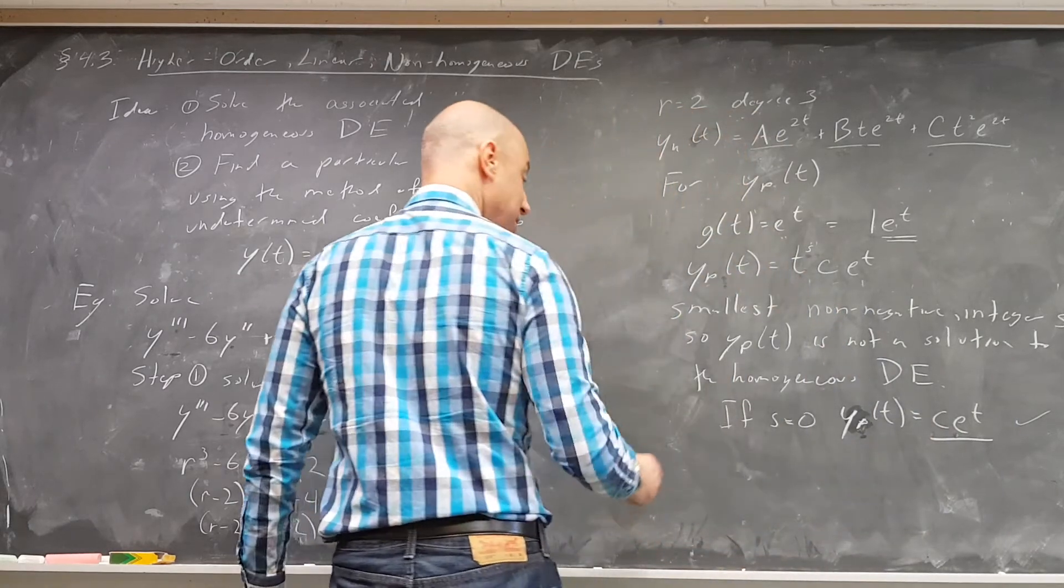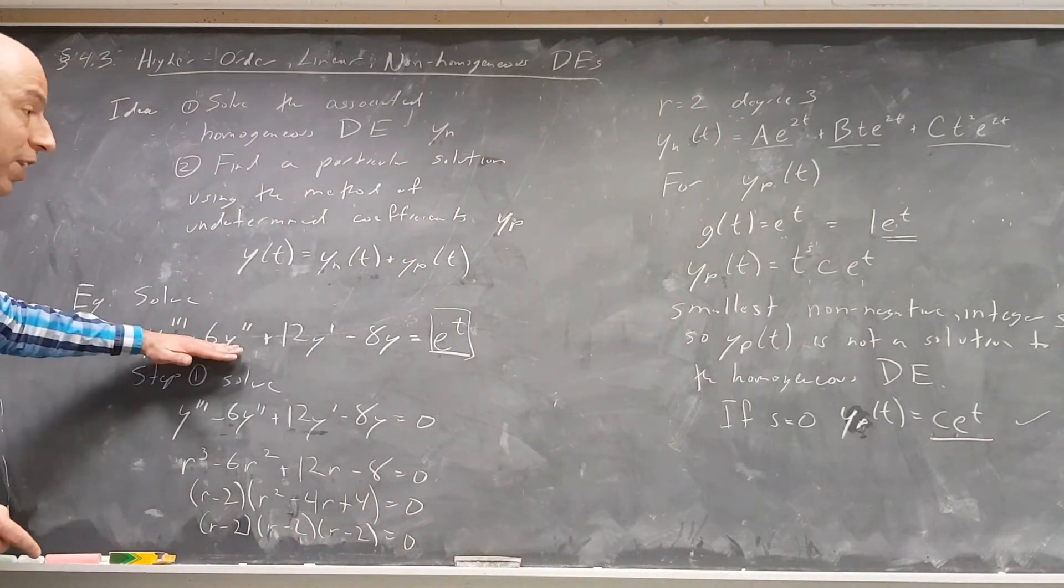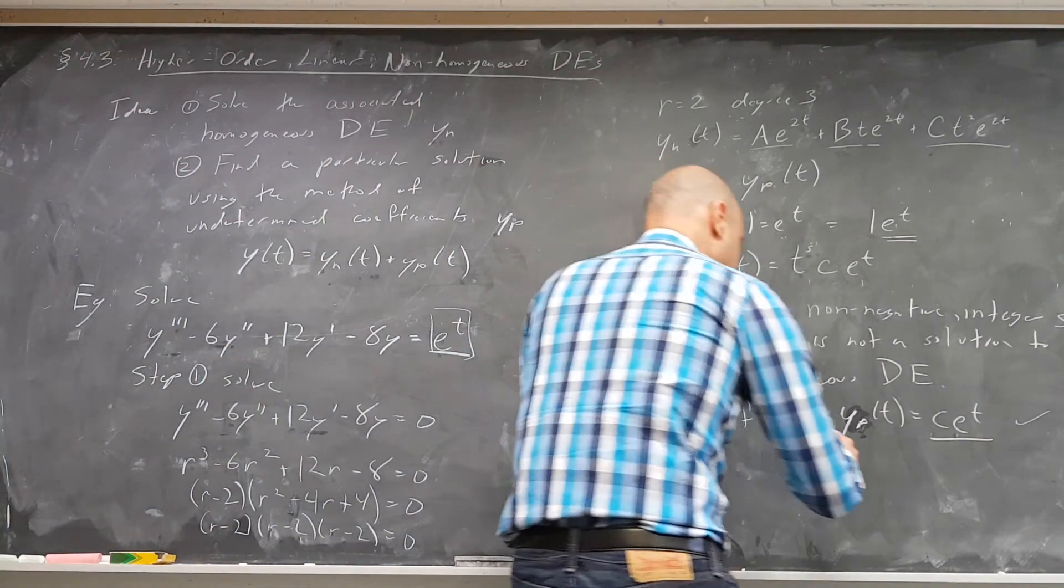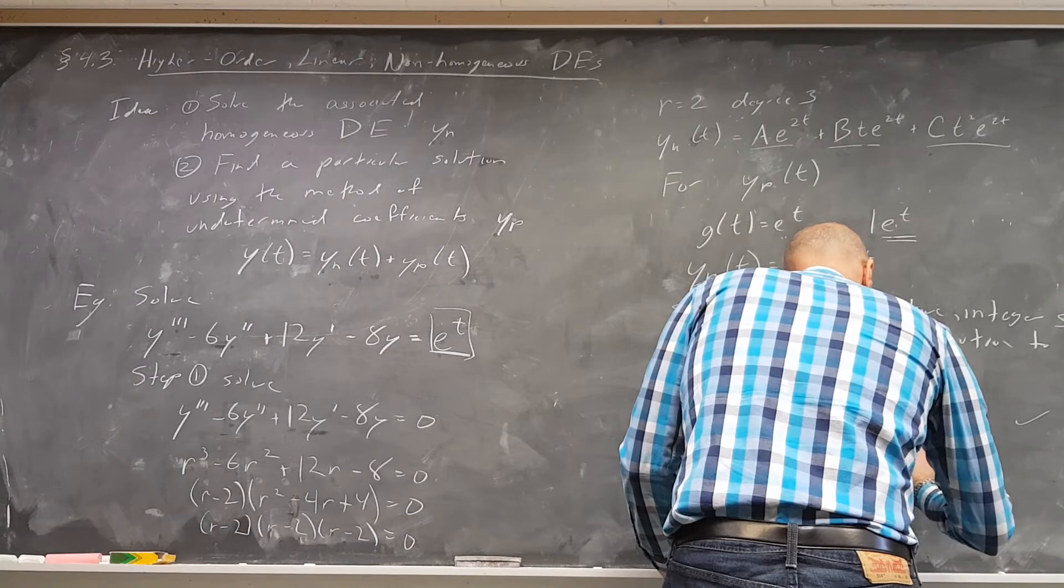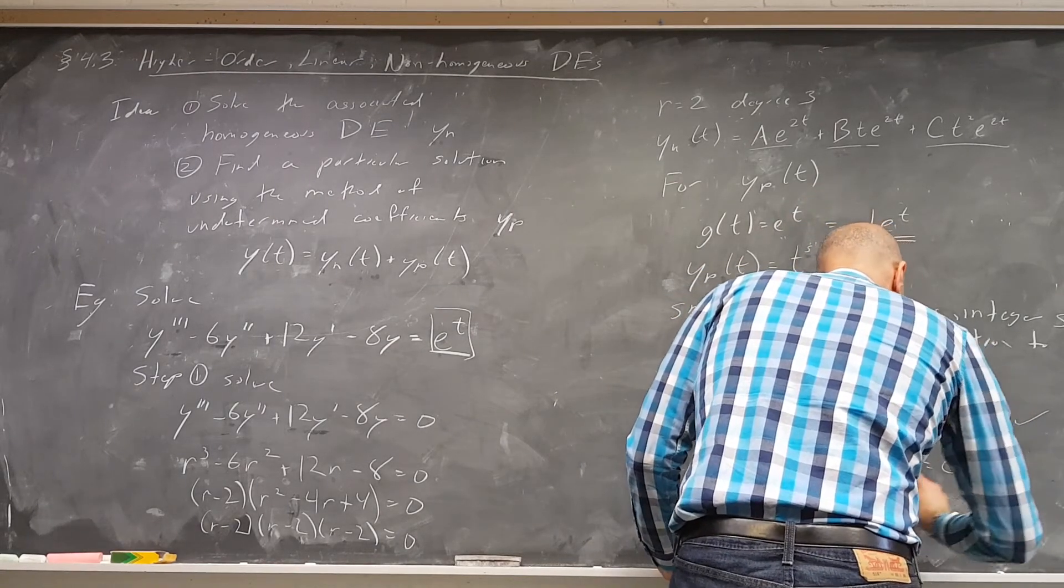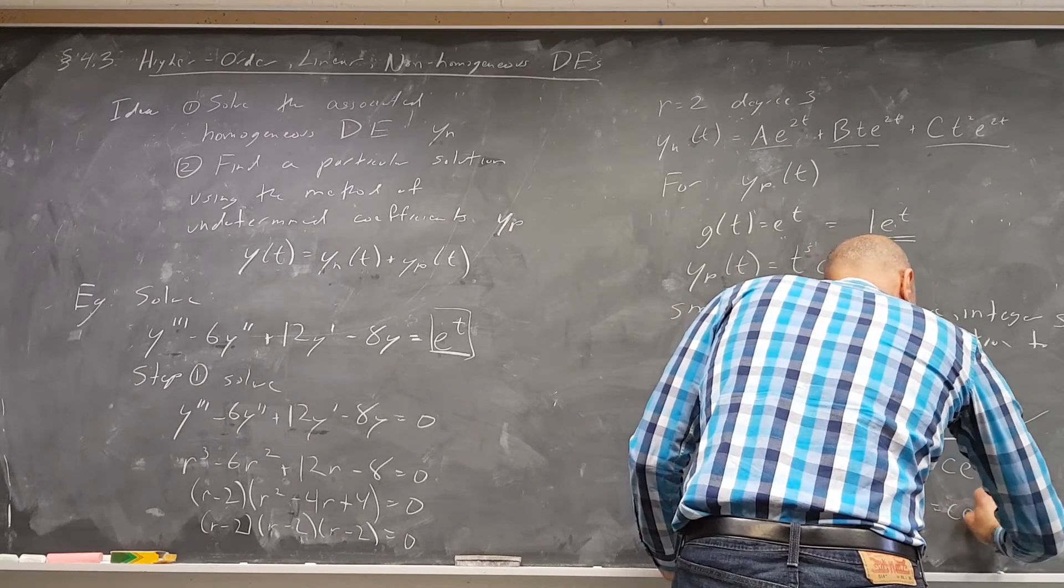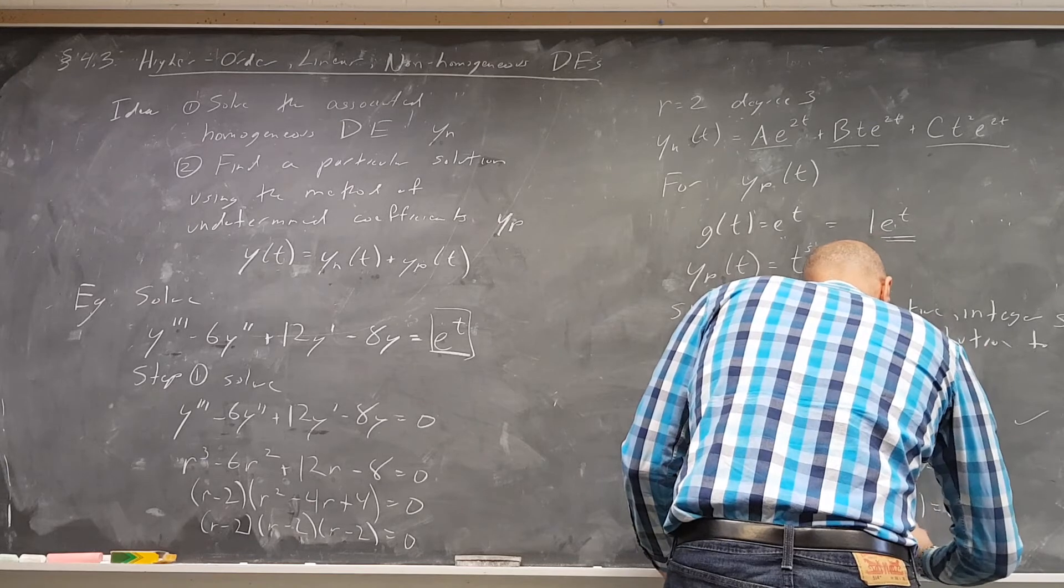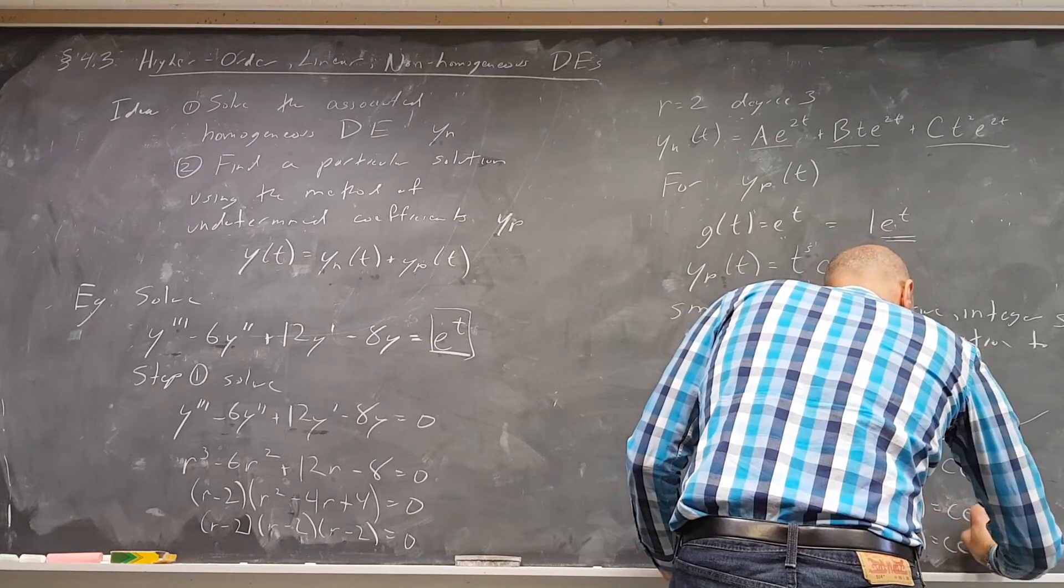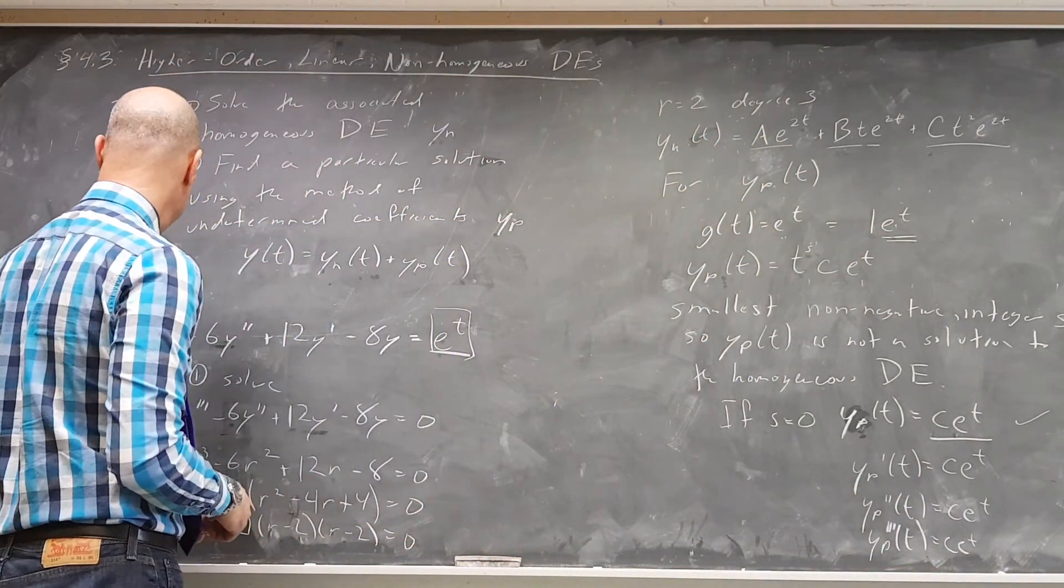So we can choose s equals 0 and we have this. Now what we're going to do is plug this back into the original differential equation. Before we do that, we need some derivatives. So y sub p prime of t, taking the derivative of that, it's easy. c e to the t, y sub p double prime of t equals c e to the t, y sub p triple prime of t equals c e to the t. Derivative of e to the t is just e to the t. So taking those derivatives is easy.